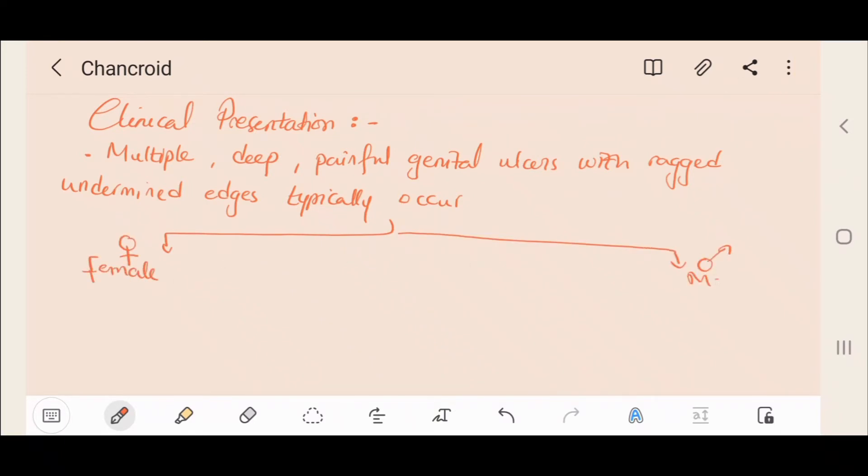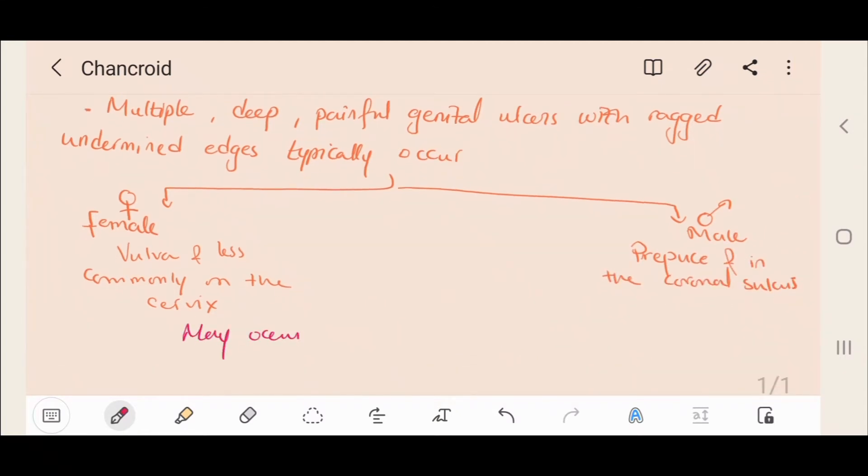If the patient is female, ulcers occur on the vulva and less commonly on the cervix. If the patient is male, they occur on the prepuce and in the coronal sulcus.